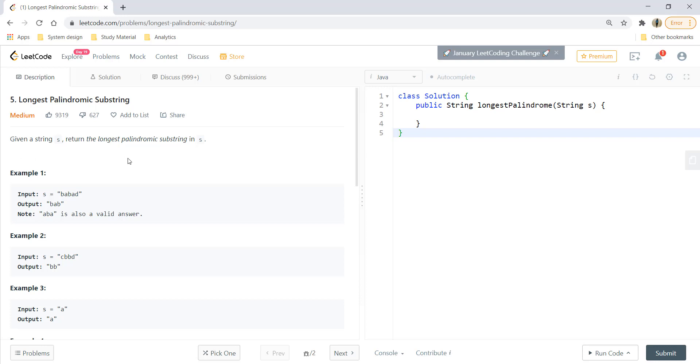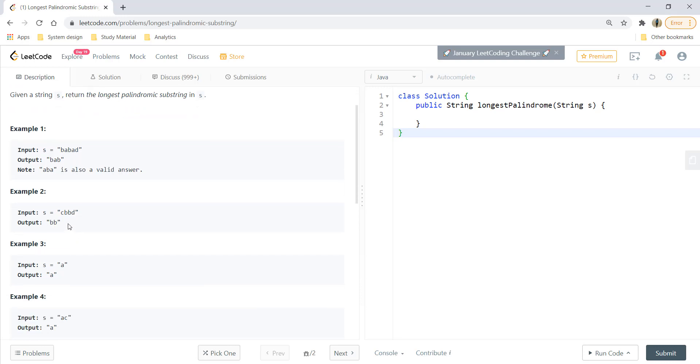Given a string s, return the longest palindrome substring in s. If you are given this string, the longest palindrome that we can get is bab or aba, and the length of it is 3. Any of bab or aba is a valid answer in this case. For the second example, bb is the longest palindromic substring and thus the output is bb.